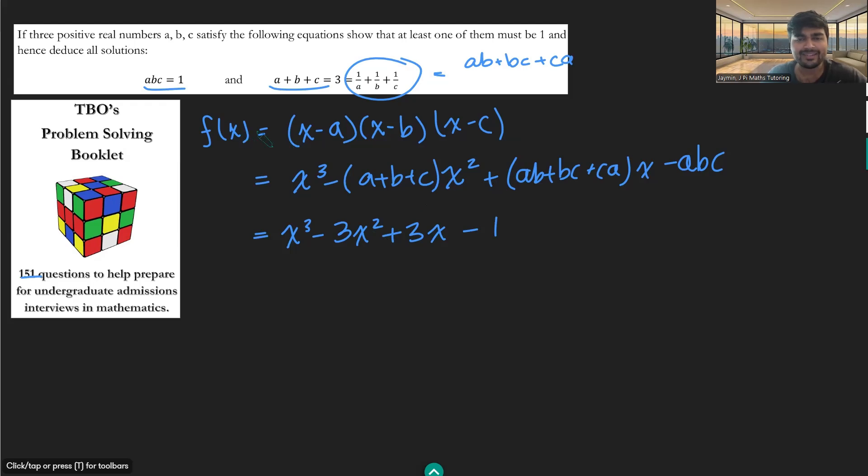And so now we get that f(x) as described is just x³ minus 3x² plus 3x minus one, but very conveniently that's just (x - 1)³. And so we get that f(x) must be (x - 1)³, but f(x) was the product of these three factors and we've also shown that it's the product of (x - 1) times (x - 1) times (x - 1).